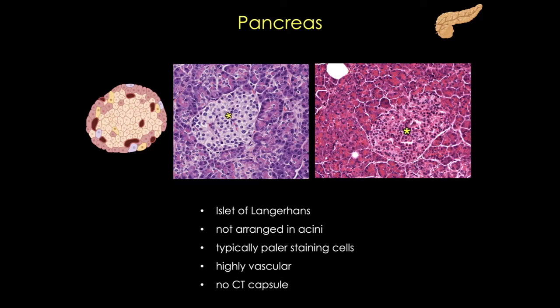Note that these islets are not separated from the acinar tissue by any kind of connective tissue capsule. Their function is to control carbohydrate metabolism. As you can see by the different colored cells in this cartoon, the islets contain different cell types that produce different hormones — the most important, or perhaps most familiar, are insulin and glucagon. This distinguishing feature is super useful, but what if we happen to be looking at an area of the pancreas that doesn't have an islet? What else can we look for?